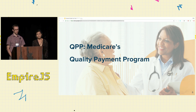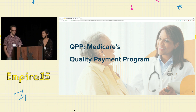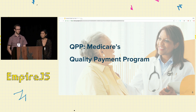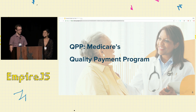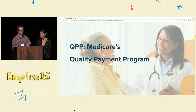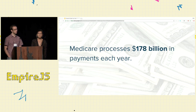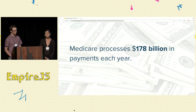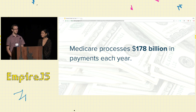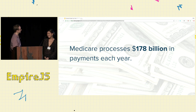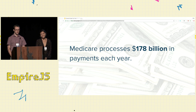QPP is an ambitious effort within the program to change how healthcare payments are incentivized. Traditionally, Medicare operated under a fee-for-service model: the more care a doctor provides, the more they get paid, and that produces the wrong incentives. The goal of QPP is to implement a quality-based system where doctors are compensated on the quality of care they provide and patient outcomes. Medicare processes $170 billion every year in payments to doctors serving 44 million elderly and often vulnerable patients — so it's really important to get the incentives working correctly.